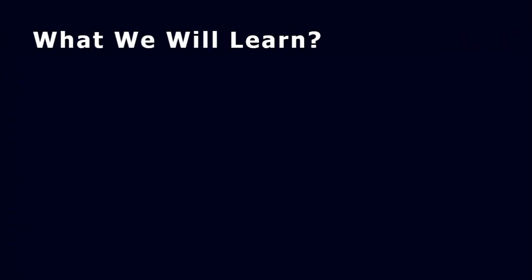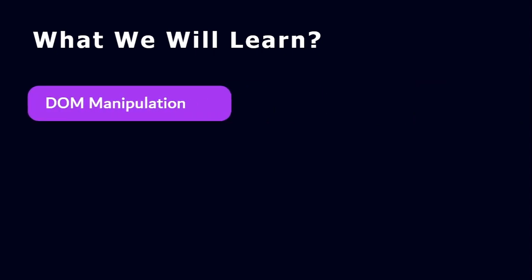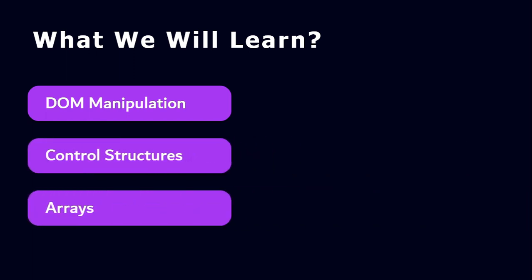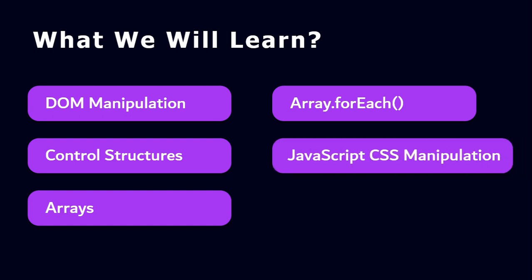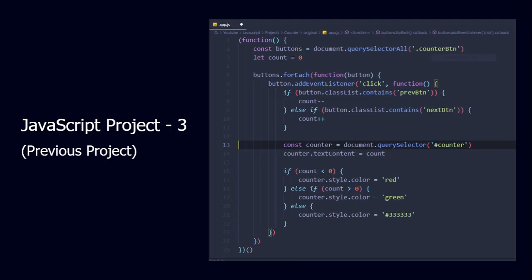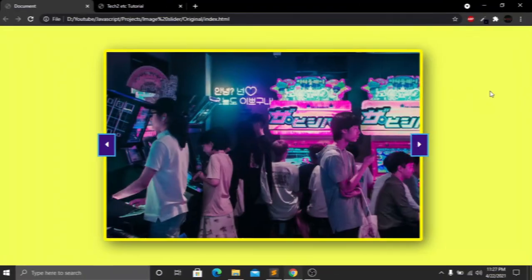By creating this JavaScript project we will be learning six JavaScript fundamentals: DOM manipulation, control structures, arrays, the arrays dot forEach function, JavaScript CSS manipulation, and event listeners. In our previous JavaScript project we created a simple JavaScript counter, and today I will modify that previous code for this project.